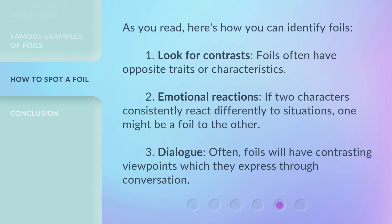As you read, here's how you can identify foils. First, look for contrasts — foils often have opposite traits or characteristics. Second, pay attention to emotional reactions: if two characters consistently react differently to situations, one might be a foil to the other. Third, listen to dialogue — foils will often have contrasting viewpoints which they express through conversation.